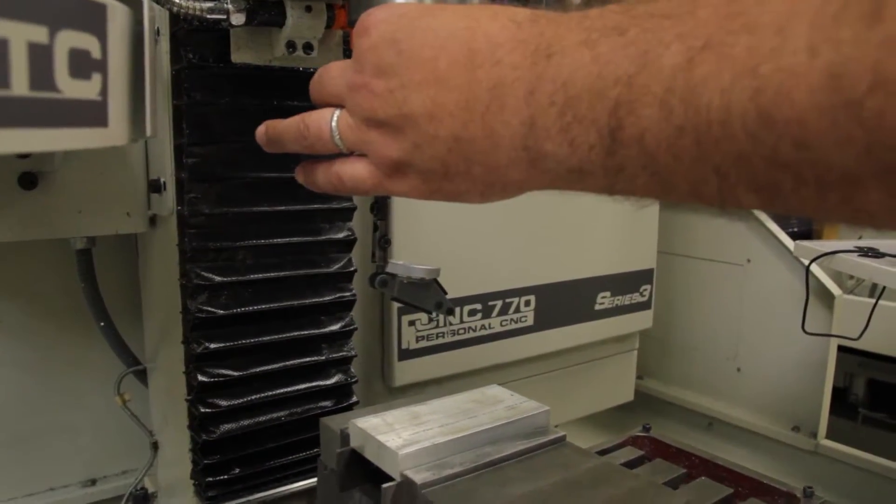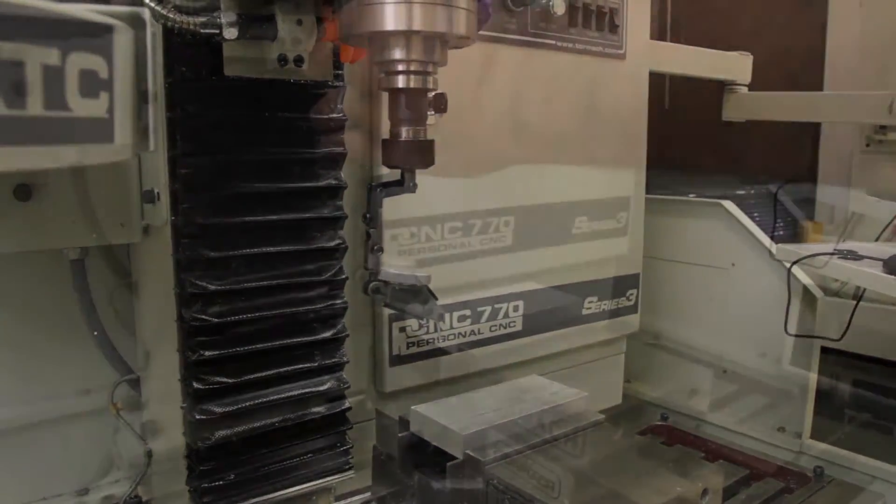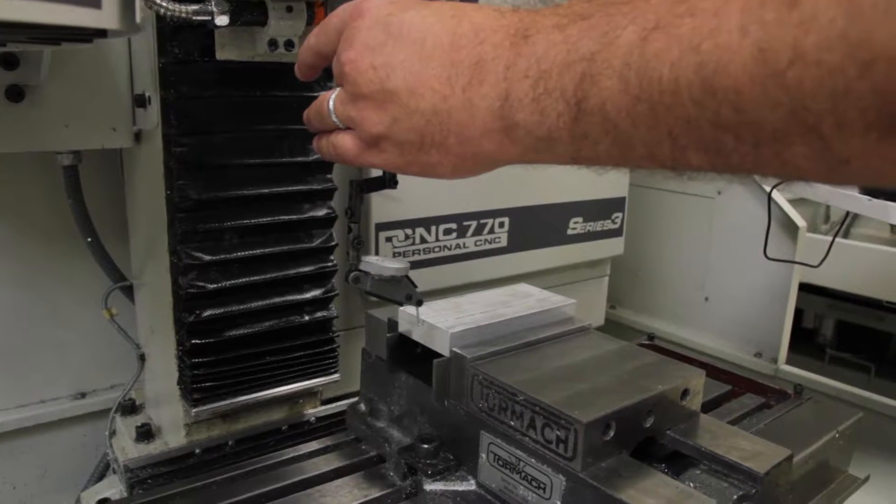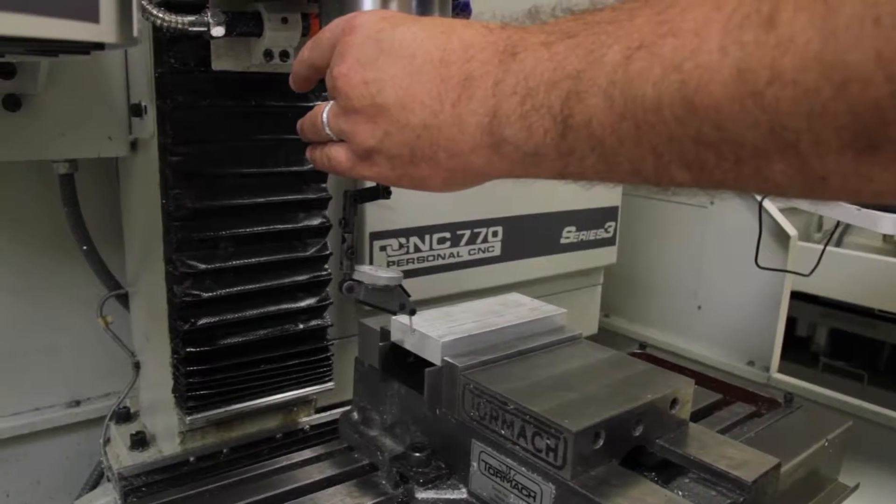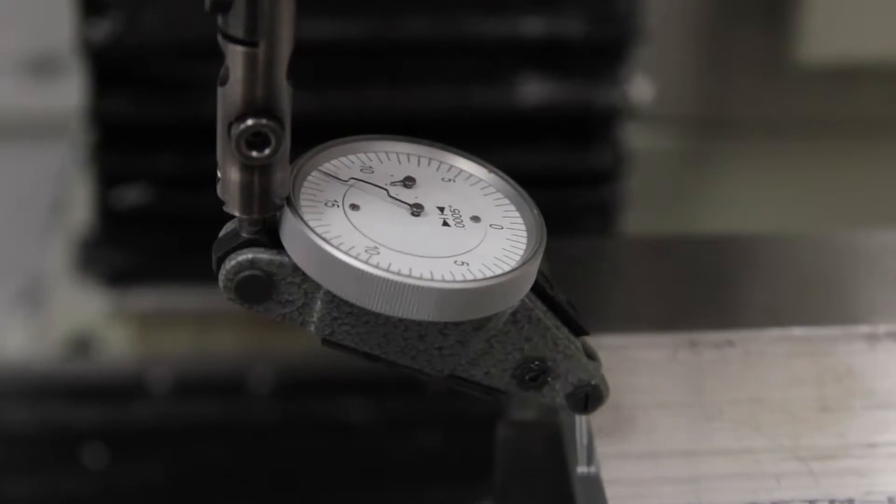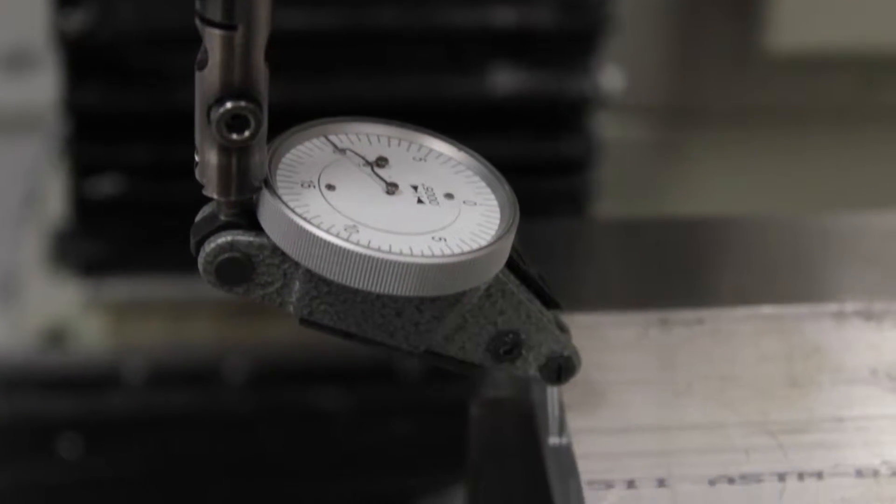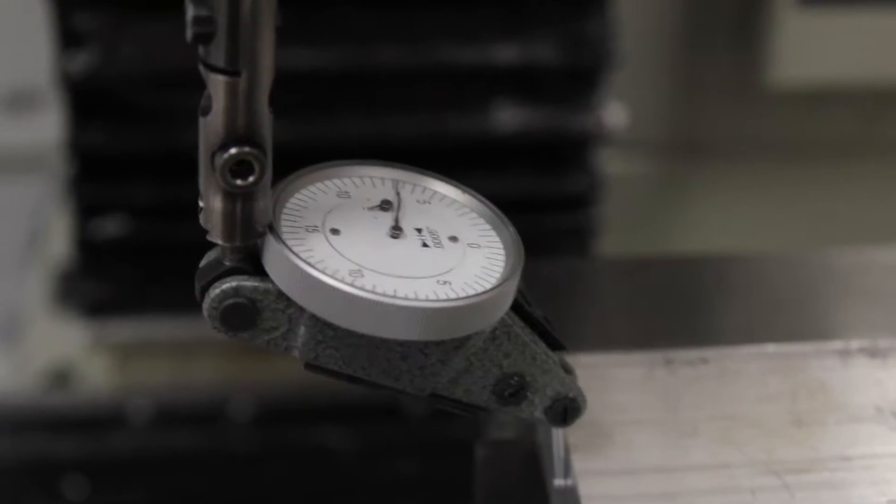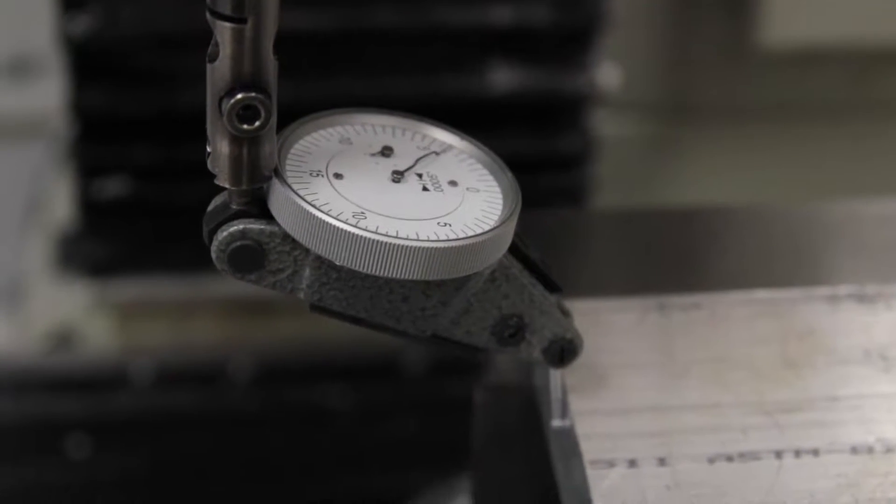Jog your indicator over on the end of your part. Sweep it with the indicator until you get the indicator to read zero while you're jogging the table over.